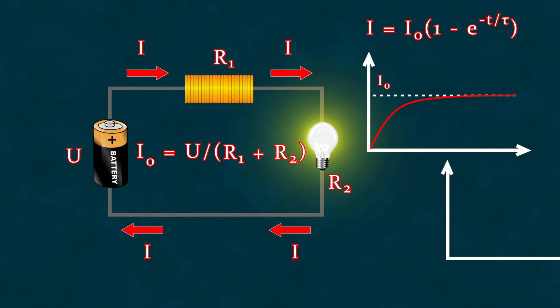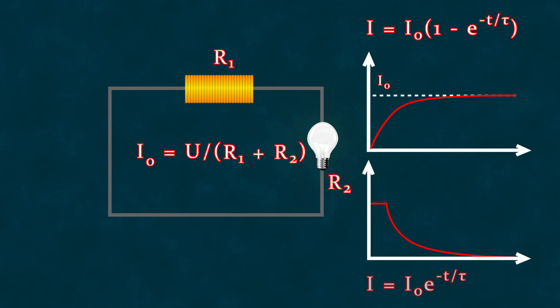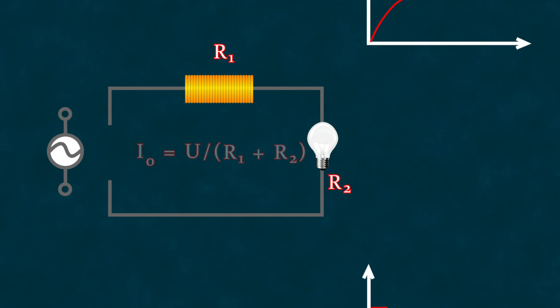Now let's remove the battery, keeping the circuit closed. The current in the circuit will begin to dissipate, and our coil will resist this change, with the self-induced EMF being in the same direction as the source's EMF. Thanks to the coil, the current will persist longer. The current's change over time will be described by the following formula.